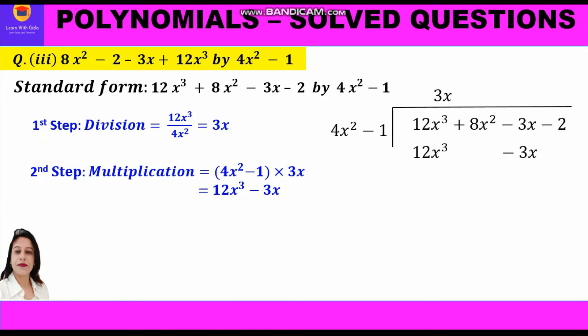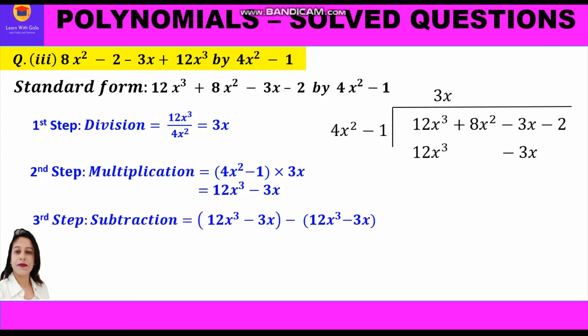So 12x³ is written below 12x³, and minus 3x is written below minus 3x. We leave space for 8x² and write nothing there, or add plus 0. Then we move to the third step, subtraction.